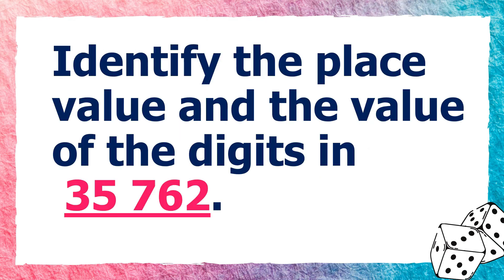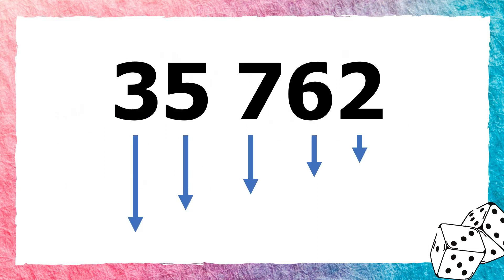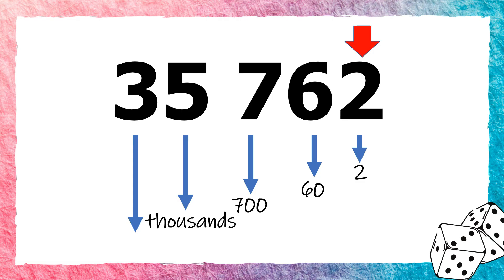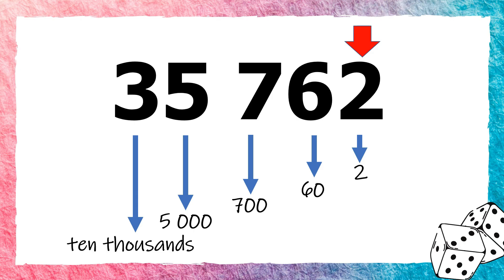Let us try answering this: identify the place value and the value of the digits in 35,762. Starting at the rightmost digit — the place value of 2 is 1s and its value is 2; the place value of 6 is 10s and its value is 60; the place value of 7 is 100s and its value is 700; the place value of 5 is 1,000s and its value is 5,000; and the place value of 3 is 10,000s and its value is 30,000.